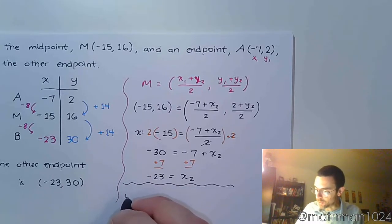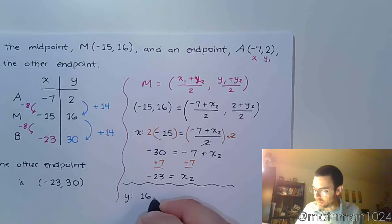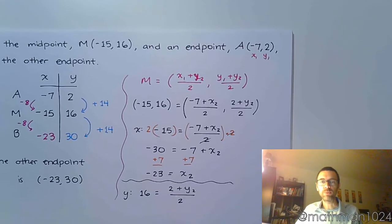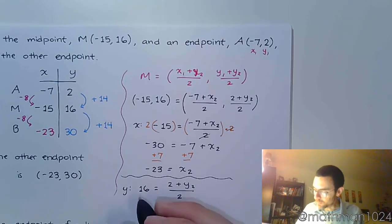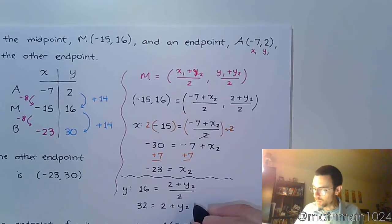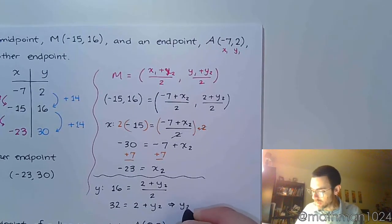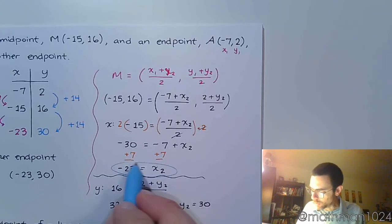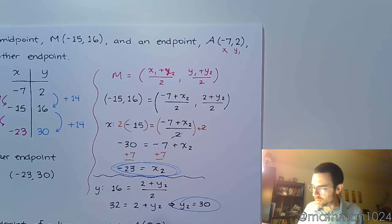And you can do the same thing with the y. You can say that 16 is equal to 2 plus y2 divided by 2. If you multiply both sides of the equation by 2, you get that 32 is equal to 2 plus y2, which then means y2 is equal to 30 when you subtract 2 on both sides. So what we find here for x2 and y2 is the same thing that I have here, it just takes a little bit more work.